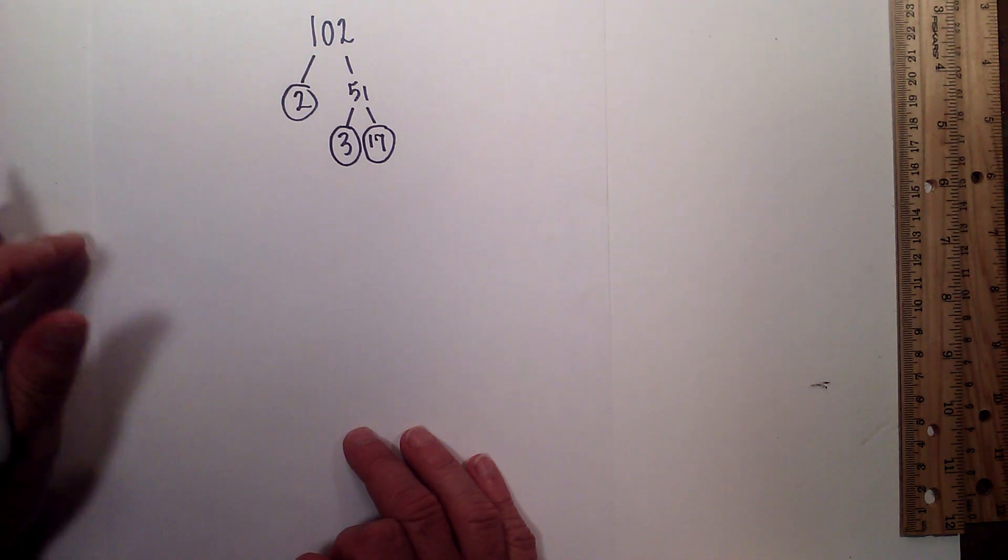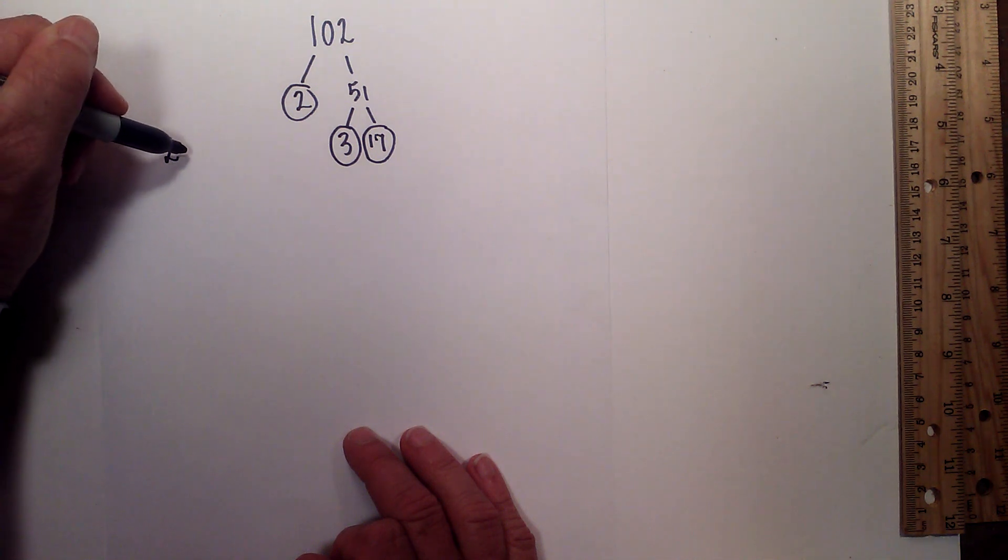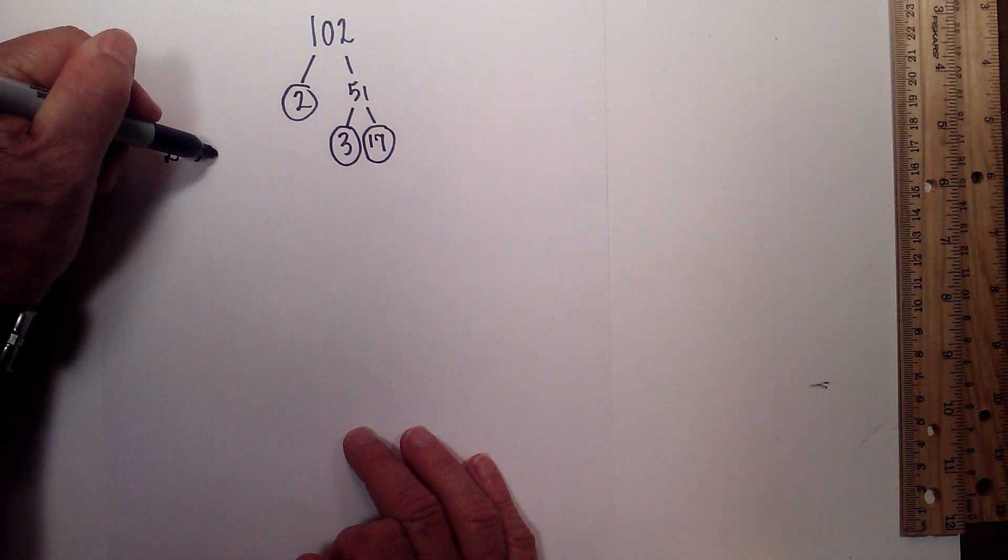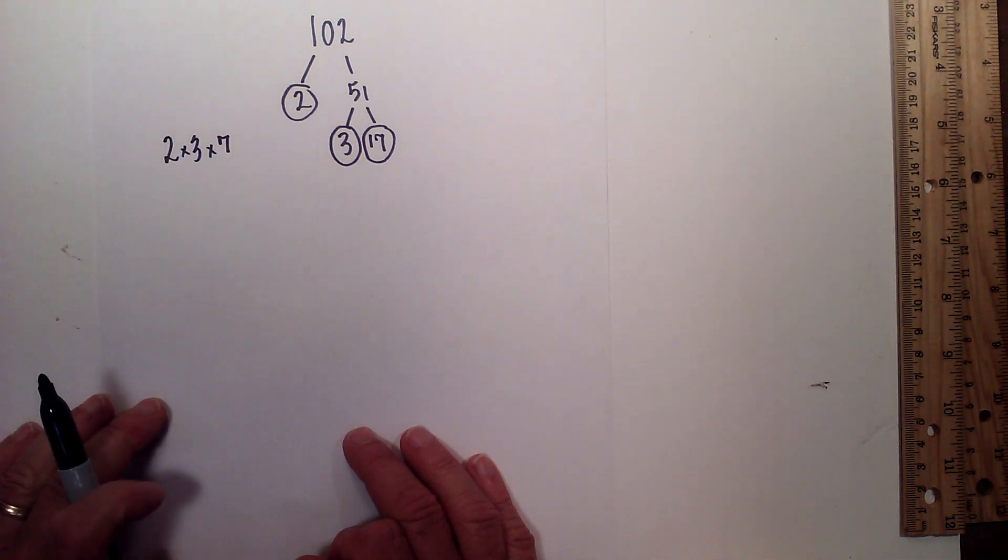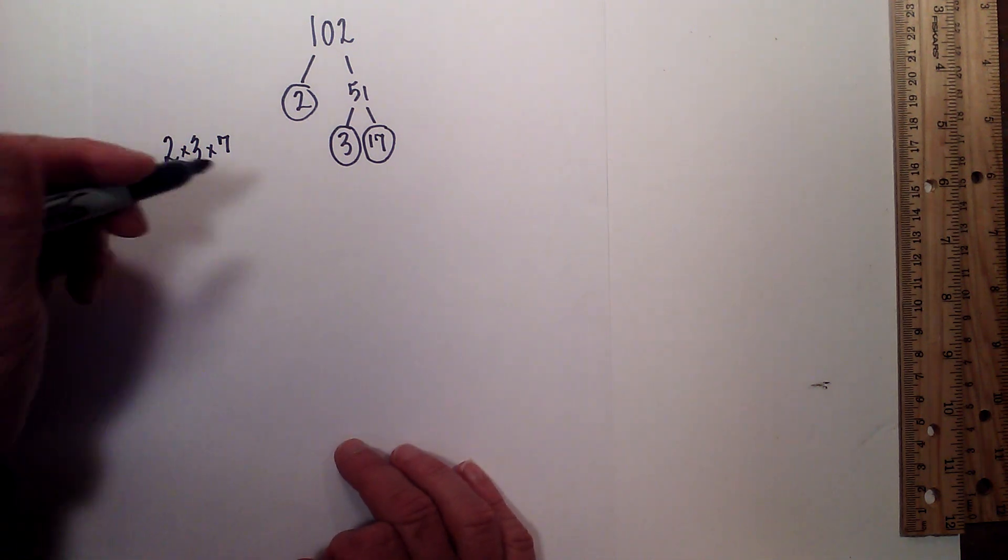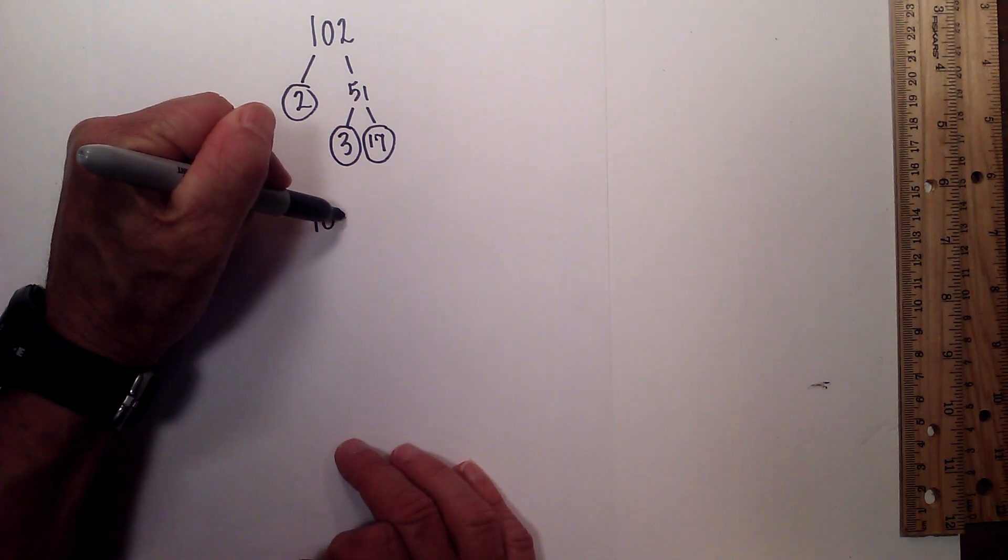So the prime factorization of 102 is 2 times 3 times 17. So now let's look at 104.